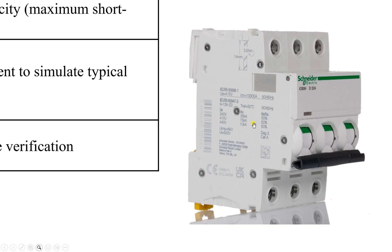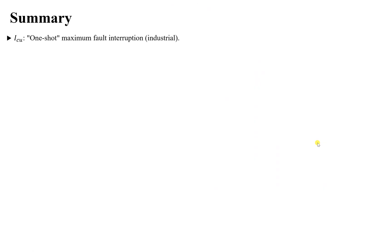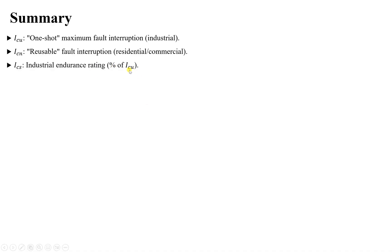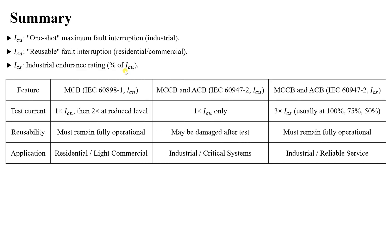To summarize: there are two IEC parts — IEC 60898-1 for household applications which defines ICN, and IEC 60947-2 for industrial applications which defines ICU and ICS. ICU is a one-shot maximum fault interruption for industrial use — the breaker must withstand it once. ICN means the breaker must interrupt the rated fault current several times, used for residential and commercial. ICS is a percentage of ICU indicating how many times the breaker can withstand faults repeatedly.